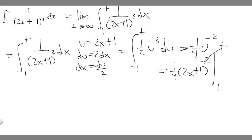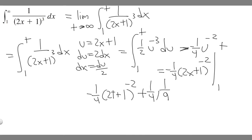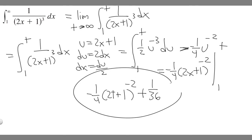Now plug in the bounds. Plugging in t gives minus 1 over 4 times 2t plus 1 to the minus 2. Then we subtract the expression with x equals 1: minus minus 1 over 4, which becomes plus 1 over 4. With x equal to 1: 2 times 1 is 2, plus 1 is 3, so 3 to the minus 2, which is 1 over 9. Then 1 over 4 times 1 over 9 is 1 over 36. So we have minus 1 over 4 times 2t plus 1 to the minus 2 plus 1 over 36.